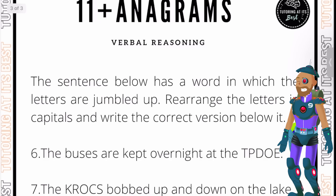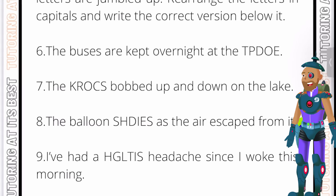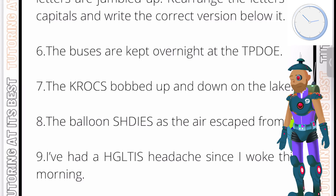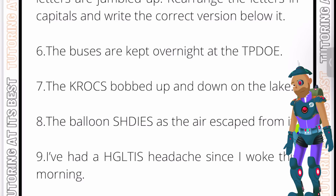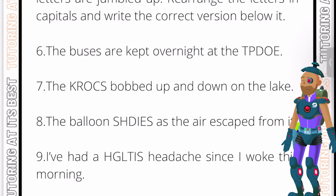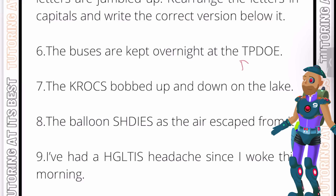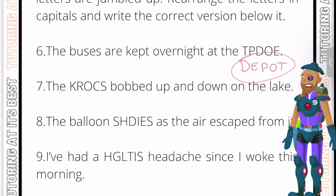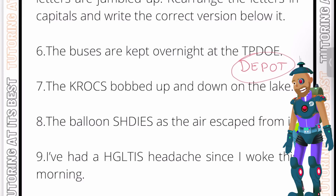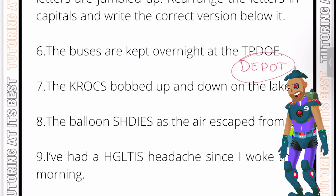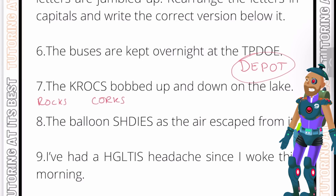Let's now go over to the second and final set of questions. Don't forget to pause the video at any given time, attempt the questions, and then press play to see the solutions. Question six: the buses are kept overnight at the something. What would be the name of a place where buses are kept? The answer is 'depot', which is a place for storage. Question seven: something bobbed up and down on the lake. We could make 'salk' or 'crocs' but those aren't real words. The answer could be 'rocks' or 'corks', but rocks don't float, so the answer must be 'corks'.